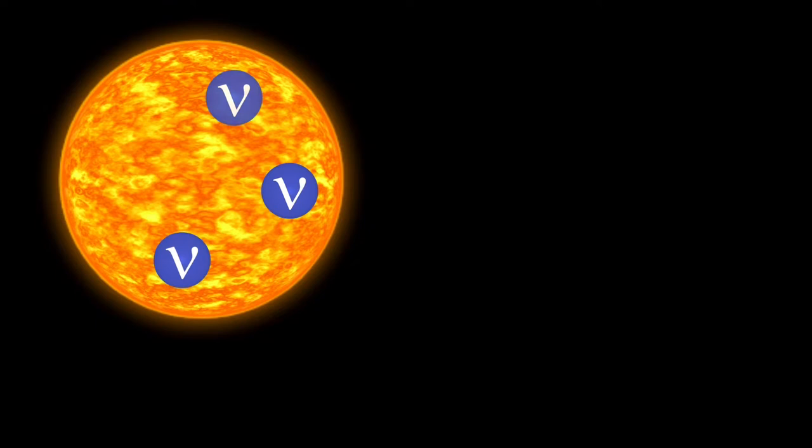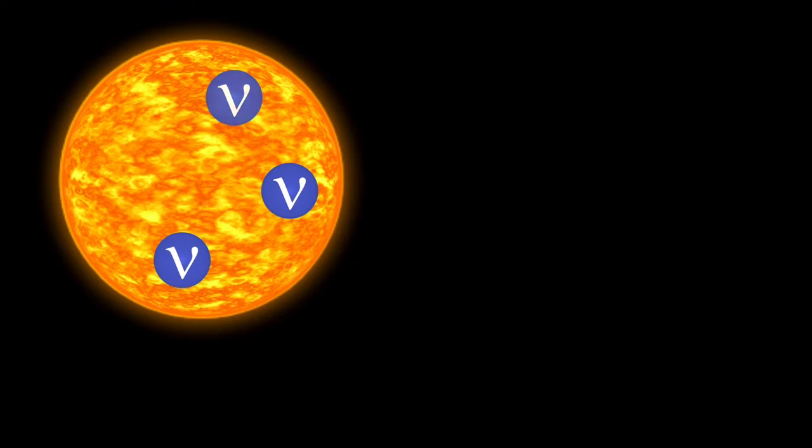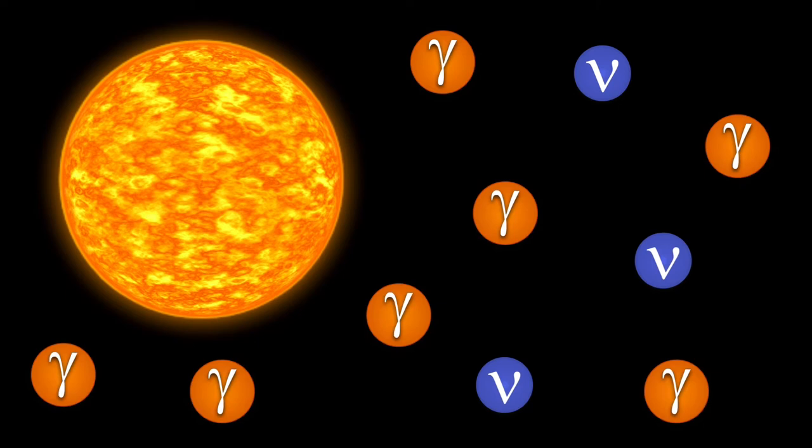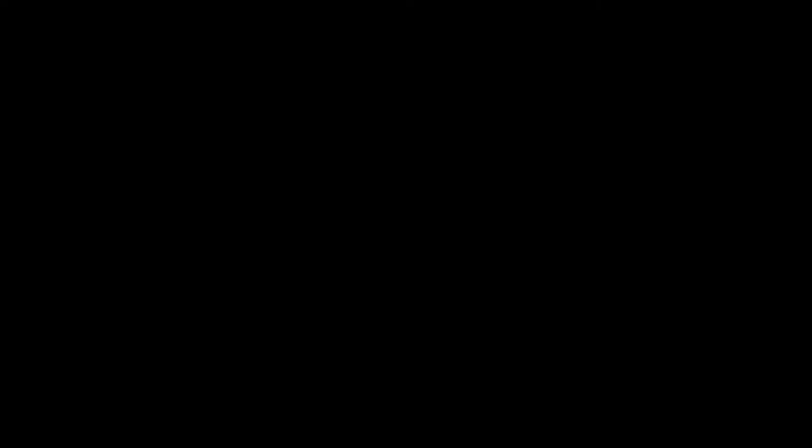Most of the neutrinos that reach Earth come from nuclear reactions inside the sun. The neutrinos are the second most numerous particles in the entire universe, second only to photons which are the particles associated with light.